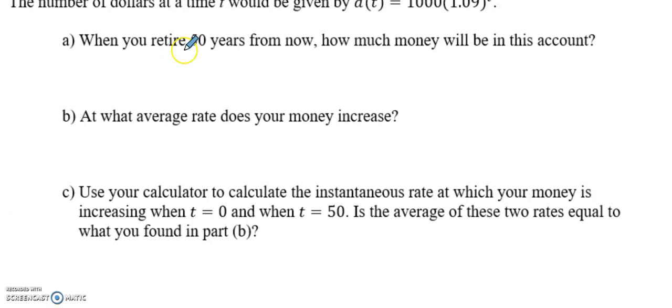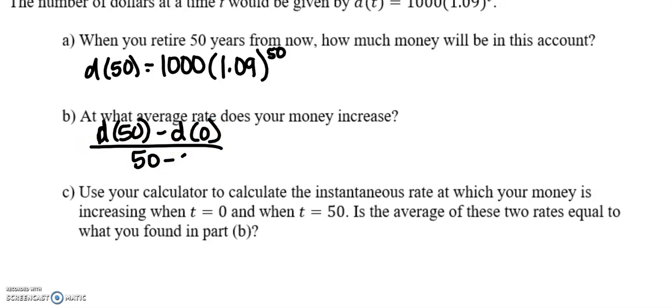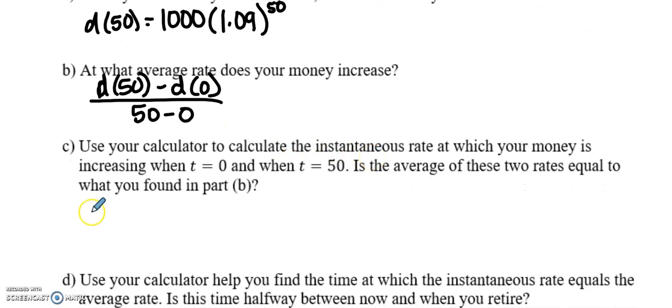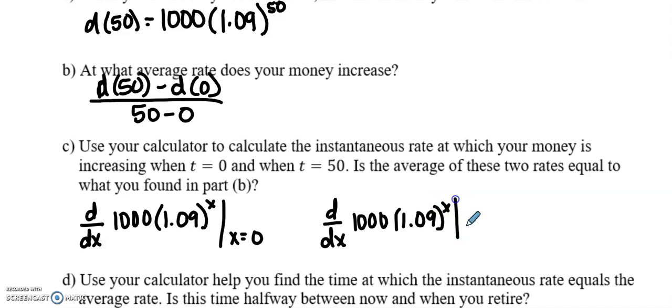You're going to actually use your calculator. So when you retire 50 years from now, you're really finding D(50) equals 1000(1.09) to the 50th. You can type that in. At what average rate does your money increase? Well, you're going to want D(50) minus D(0) over 50 minus 0. Because average rate would be old school slope. Use your calculator to calculate the instantaneous rate. So you're going to take d/dx. This is something you were supposed to watch in your video this weekend. It's math 8 if you need that. You're going to evaluate that at x equals 0. And then you're going to evaluate that again at x equals 50.